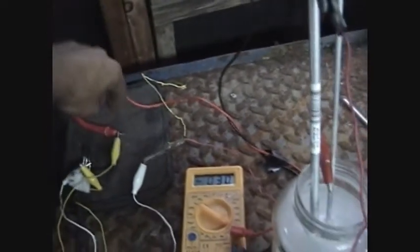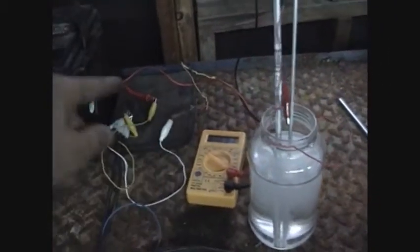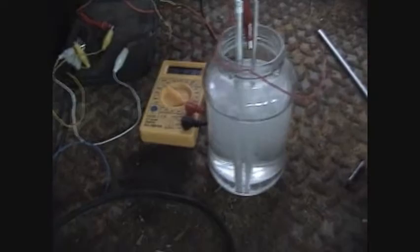Alright, same setup, except now I'm not using the trigger. It's just the rectifier straight to the meter. The meter's going up here to this tube, the other tube's going to the other side of the rectifier.